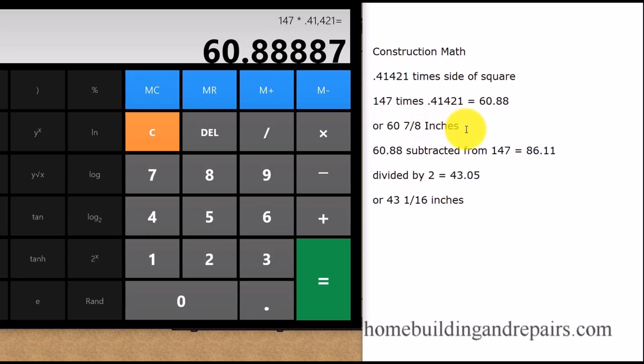To follow along what we did in our example we're going to need to subtract the number we're going to use here, 60.88. If we subtract it from 147 then we will get 86.11. So let me clear this and then I will put in 147 inches, the length of the side of our square, and we are going to subtract 60.88 and that will equal 86.11. So 86.11 is going to be the length of the board after we have subtracted the length of the side of our octagon. Now we're going to divide that by 2, divided by 2 equals 43.05, 43.05 or 43 and a 16th of an inch.